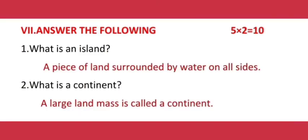Section seven: Answer the following. Number one: What is an island? Answer: A piece of land surrounded by water on all sides. Number two: What is a continent? Answer: A large landmass is called a continent.